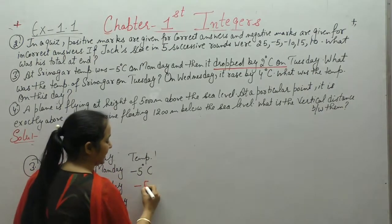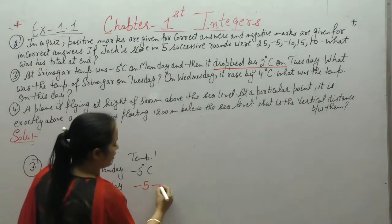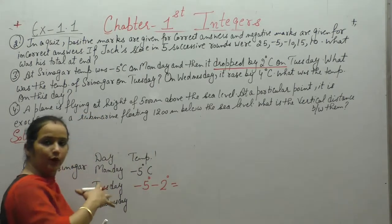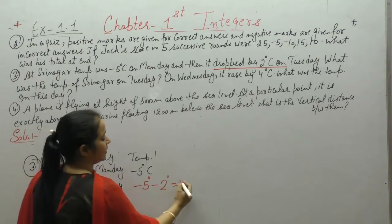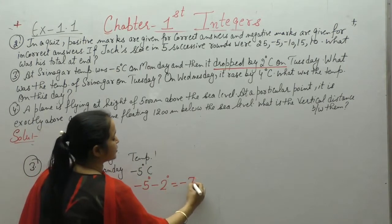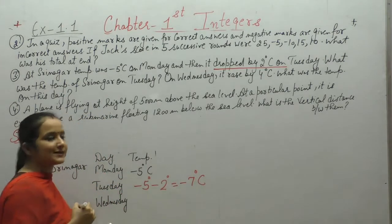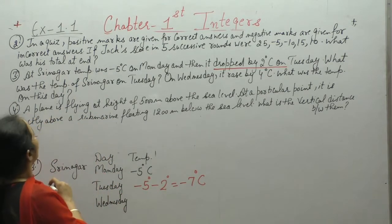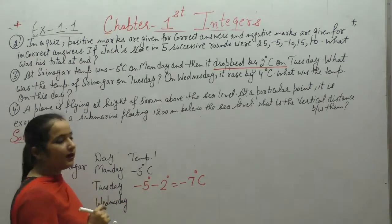Monday's temperature was minus 5°C. On Tuesday it dropped 2 more degrees, meaning it decreased. So minus 5 and minus 2 gives minus 7 degrees Celsius. That is the temperature of Srinagar on Tuesday.